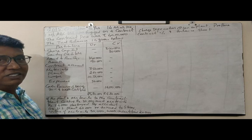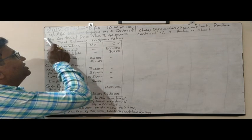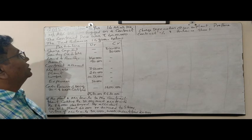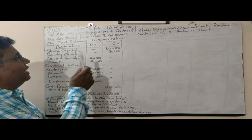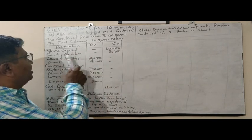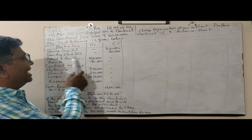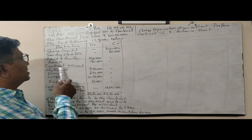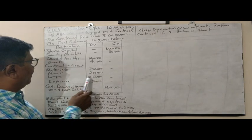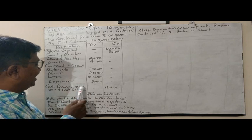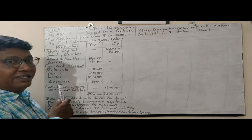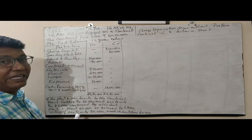Now let us see how to solve this question. It is given that Mrs. ABC was engaged on a contract. The contract price was 40 lakh rupees. The trial balance is given below with particulars, debit and credit: share capital, sundry creditors, land and building, bank balance, contract account — meaning details about the contract account are given — materials, plant, wages, expenses, and cash received being 80% of work certified. He has also given some adjustments.